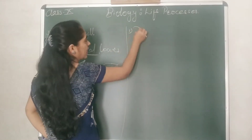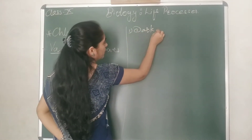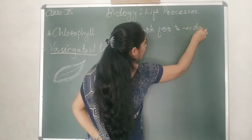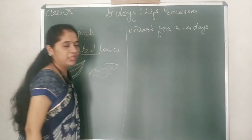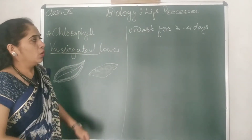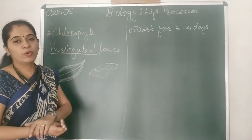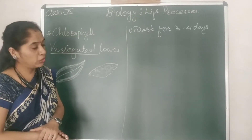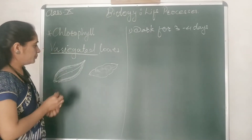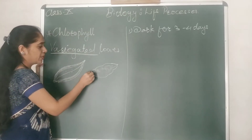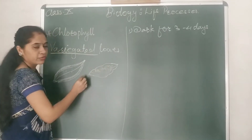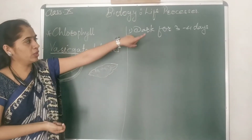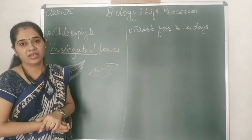Now what you have to do for this experiment: first, keep these spotted plants in the dark for three to four days, as we have done in the case of sunlight. Why are we keeping this spotted plant in the dark for three to four days? Because whatever starch is present in the leaf will be completely used up by the plant during these three to four days of darkness.